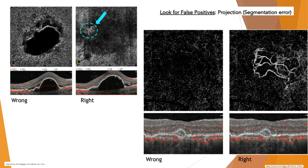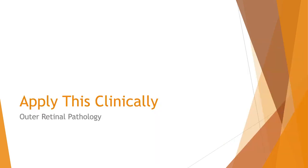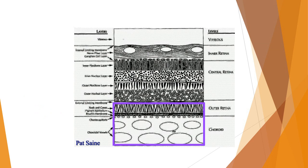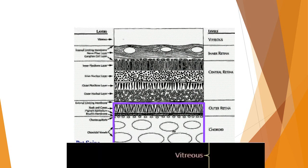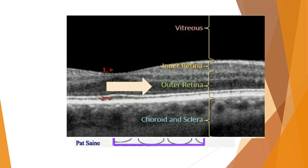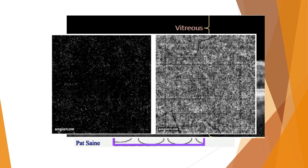Now for the second part of the webinar — clinical cases. Some are my own cases and some have been shared with me. For purposes of this webinar, we're discussing outer retinal disease — we're looking at the area above and below the RPE on the B-scan and the two angiogram slabs: outer retina and choriocapillaris. There are essentially four types of choroidal neovascularization, and I'll show an example of each, followed by central serous and PED.